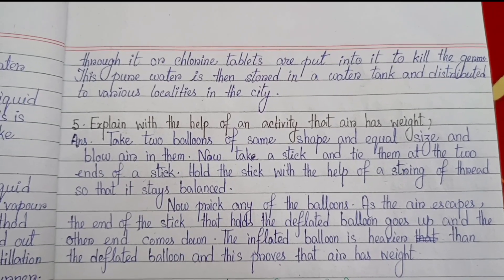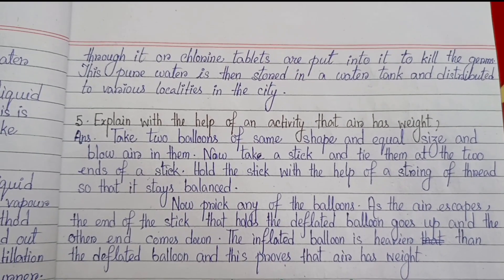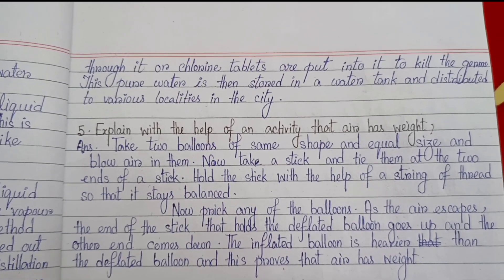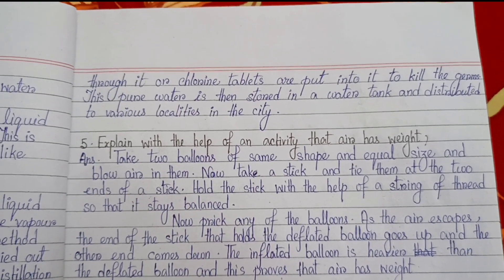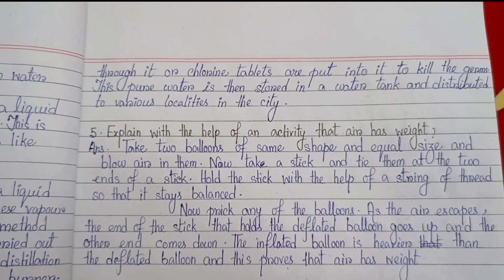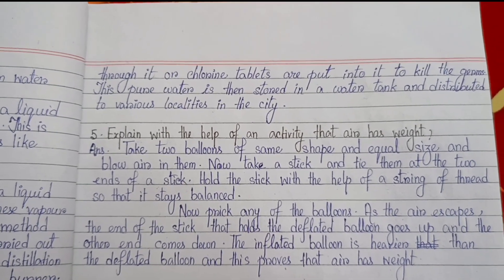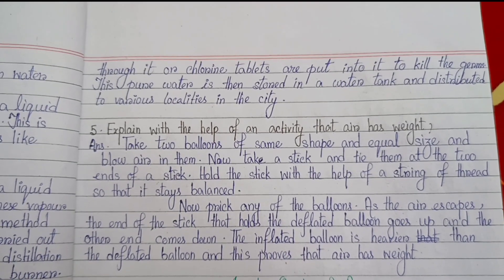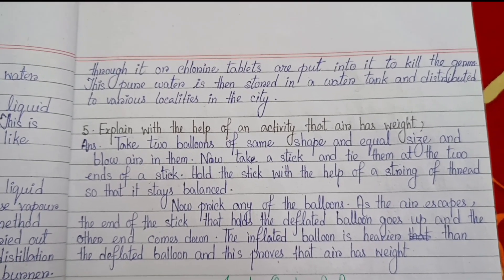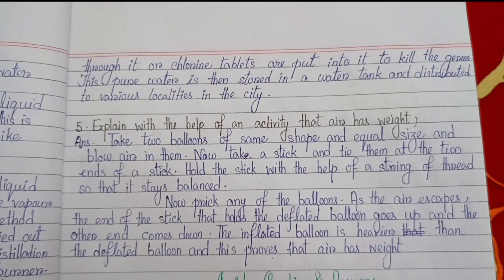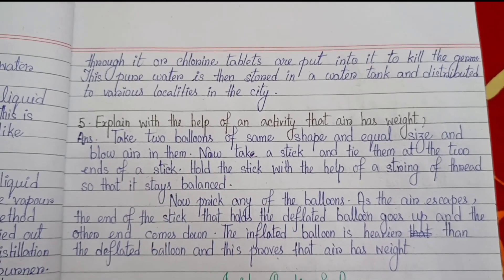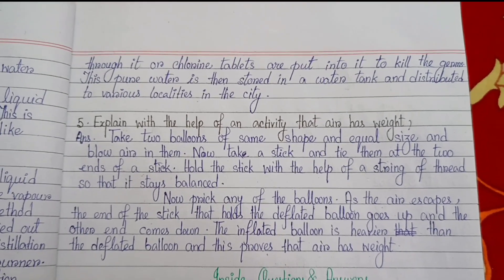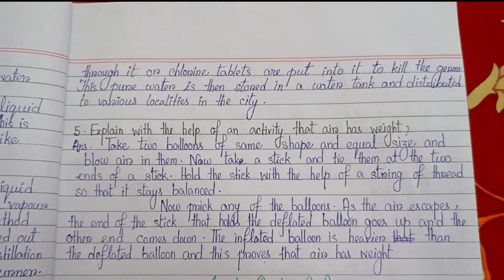Number 5: explain with the help of an activity that air has weight. Take two balloons of the same shape and equal size and blow air into them. Now take a stick and tie them at the two ends of the stick. Hold the stick with the help of a string so that it stays balanced. Now prick any one of the balloons. As the air escapes, the end of the stick holding the deflated balloon goes up and the other end comes down. The inflated balloon is heavier than the deflated balloon, and this proves that air has weight.